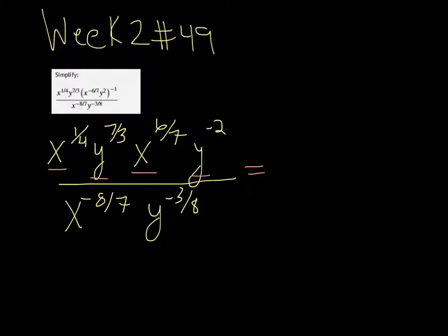This is easy if you have a good calculator that will do fractions for you. So 1/4 plus 6/7 is 31 over 28. So I get x to the 31/28.